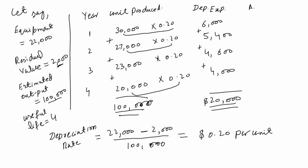Here is the accumulated depreciation and book value. Accumulated depreciation in year 1 is 6,000. In year 2, we add 6,000 and 5,400 to get accumulated depreciation of 11,400. In year 3, we add the year 3 depreciation expense to get 16,000, and in year 4 it becomes 20,000.